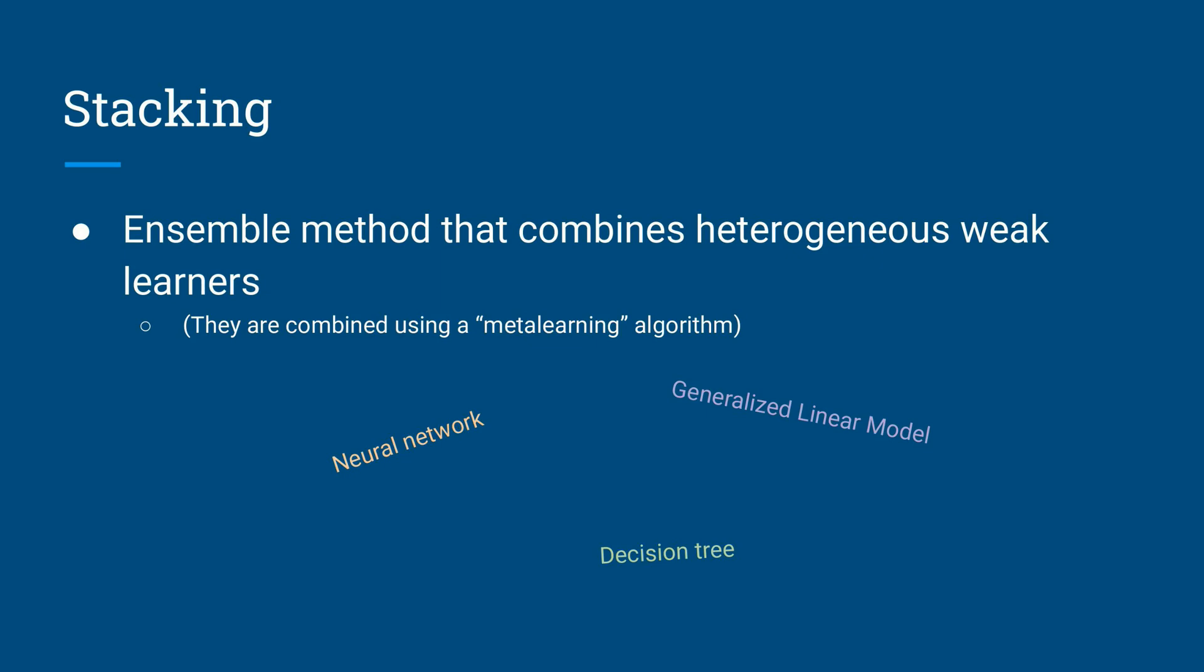Stacking is an ensembling method that combines heterogeneous weak learners. For example, you might combine neural networks with decision trees, with GLMs, and so on. It's also important to note that it's common to have bagged and boosted models as weak learners in a stacked ensemble. For this reason, stacked models can be very difficult to interpret meaningfully. With that being said, they are usually top-performing models.